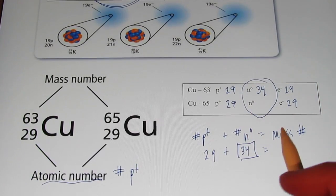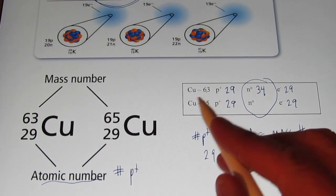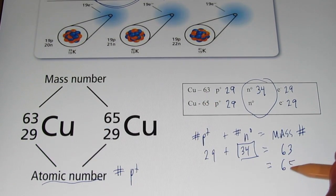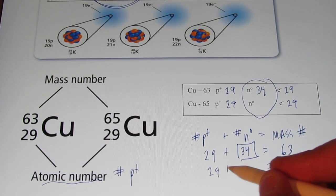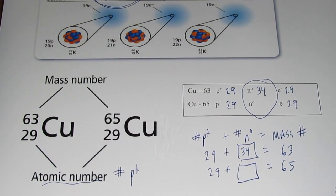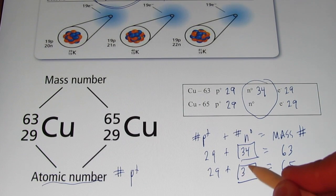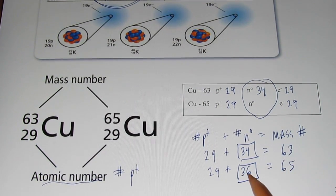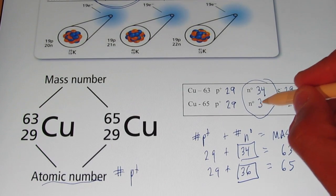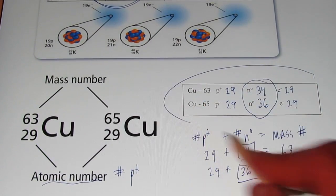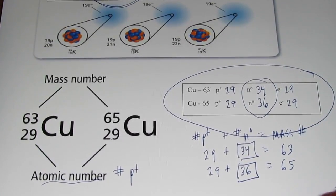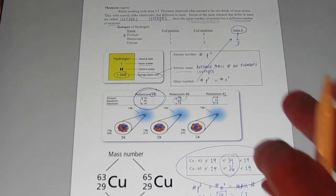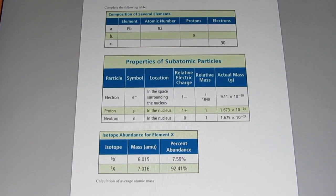For copper-65, the mass number is obviously 65. It has 29 protons, so how many neutrons must it have? If you said 36, because 36 plus 29 gives 65, you are correct. Does your chart look like mine? If it does, give yourself a pat on the back — good work. You can do any of these if you can do this example.